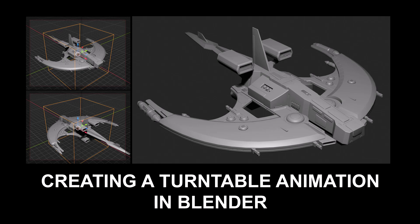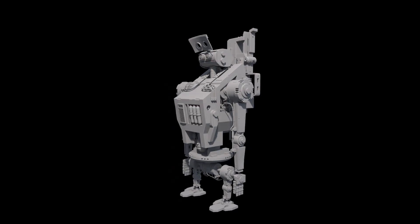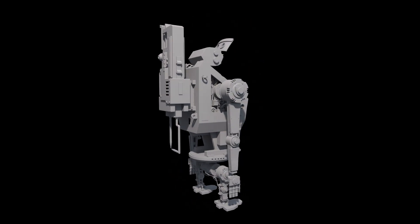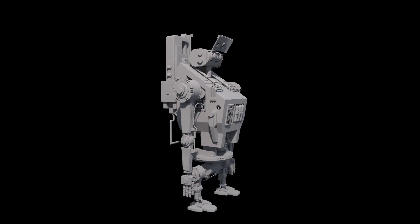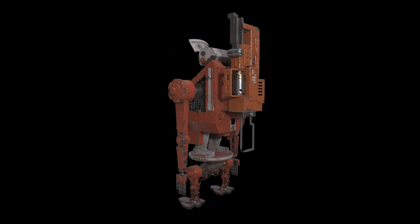Hi there, my name is Neil Blevins, and this tutorial is called Creating a Turntable Animation in Blender. So after modeling or texturing a 3D asset, you'll want to show it off from multiple angles, and the best way to do this is to create a turntable. Turntables are also a very common method for showing off your work at any game or film studio, so it's a good thing to know.